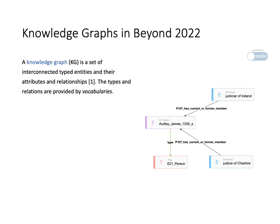A knowledge graph is a set of interconnected typed entities and their attributes and relationships. On the right-hand side we find an example.